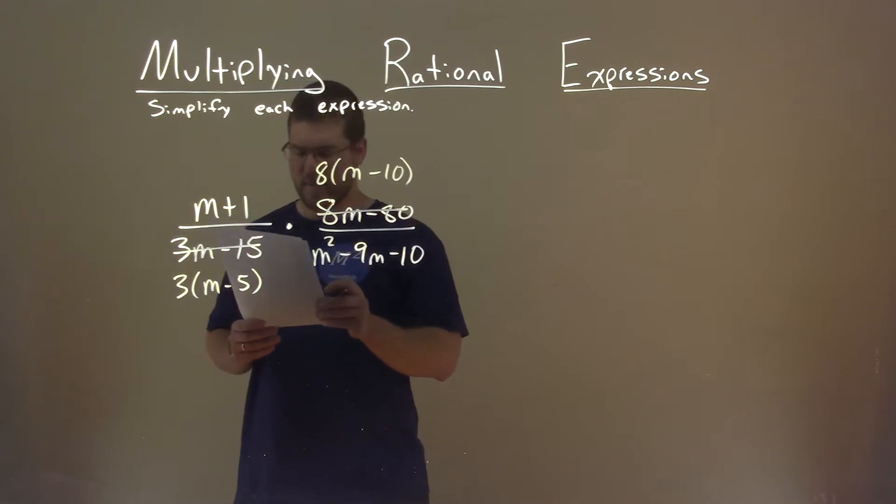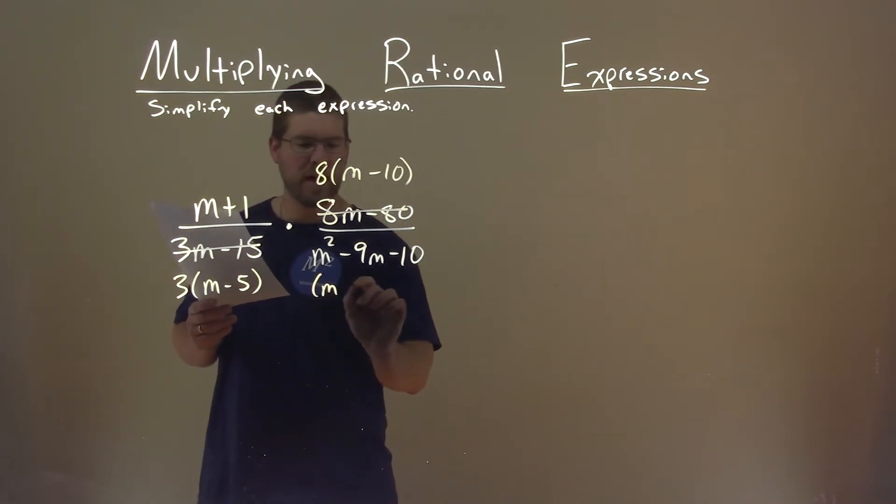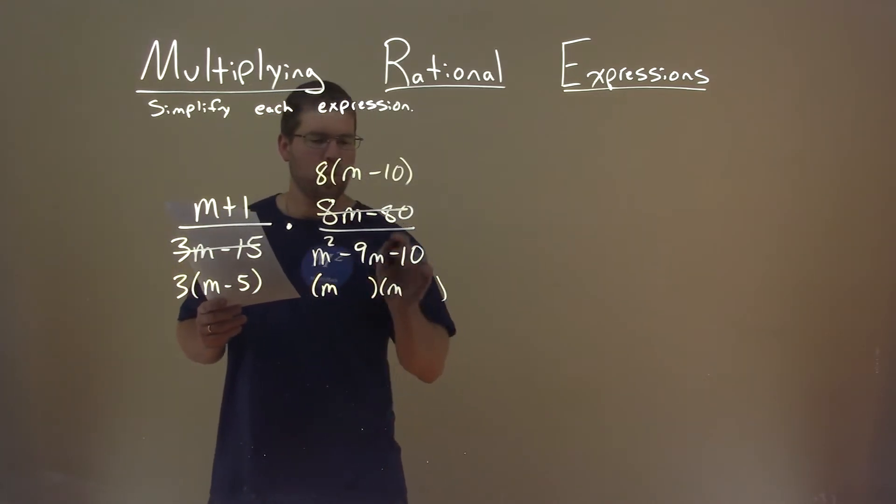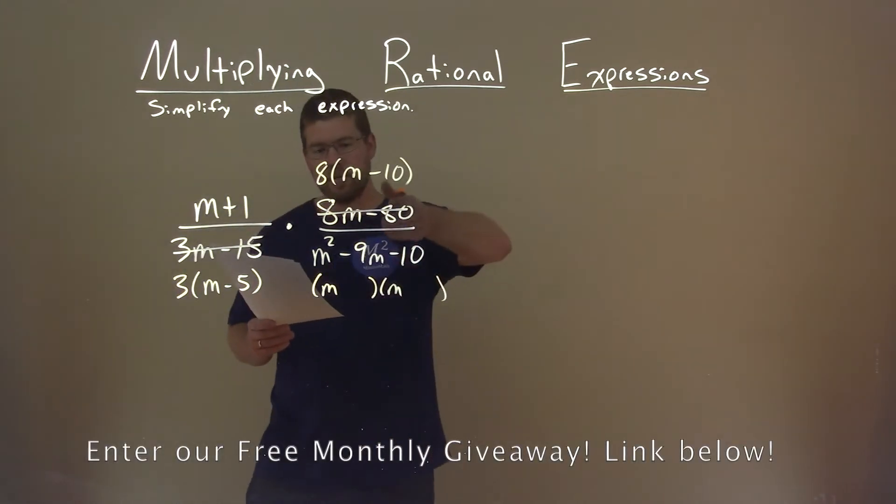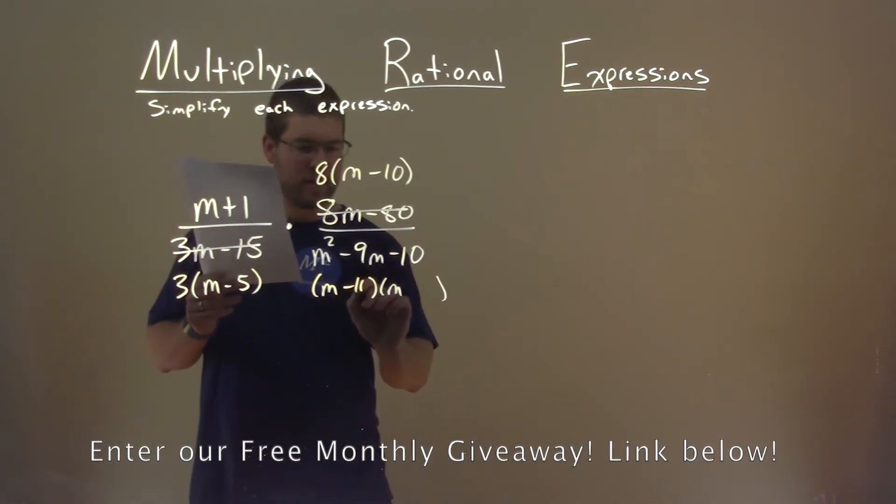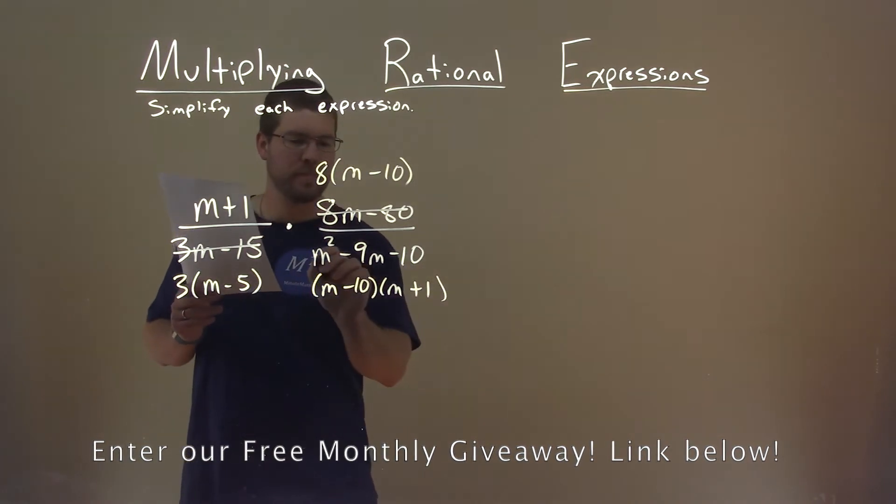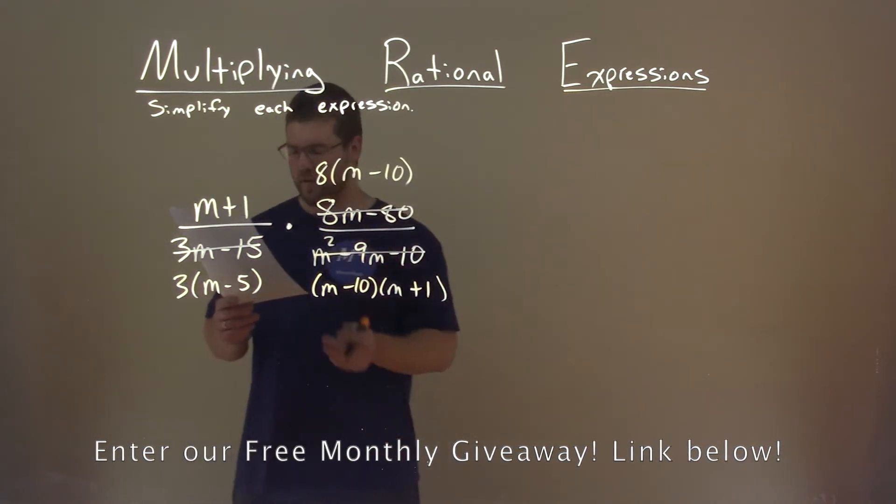This m squared minus 9m minus 10 looks like it can factor pretty easily. What two numbers multiply to be negative 10 and add to be negative 9? That's negative 10 and positive 1. So let's replace that now with our factored form.